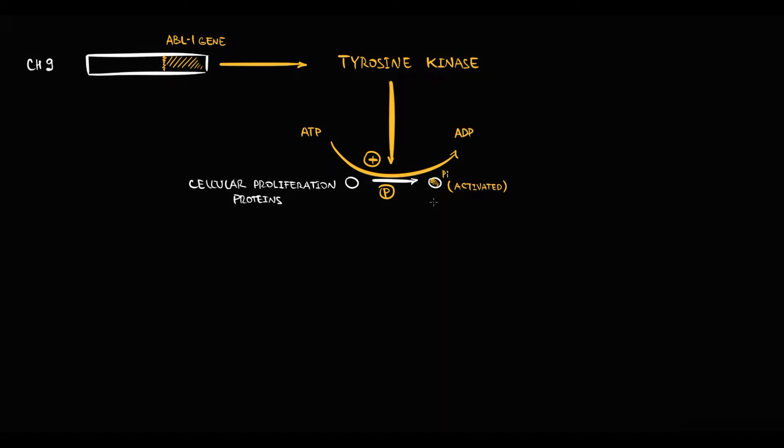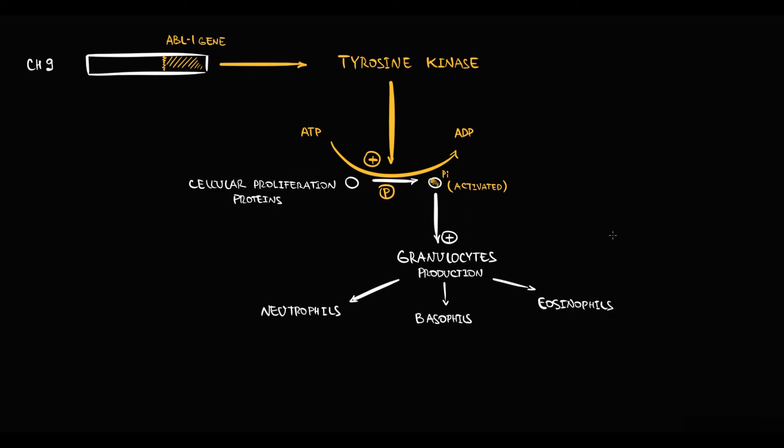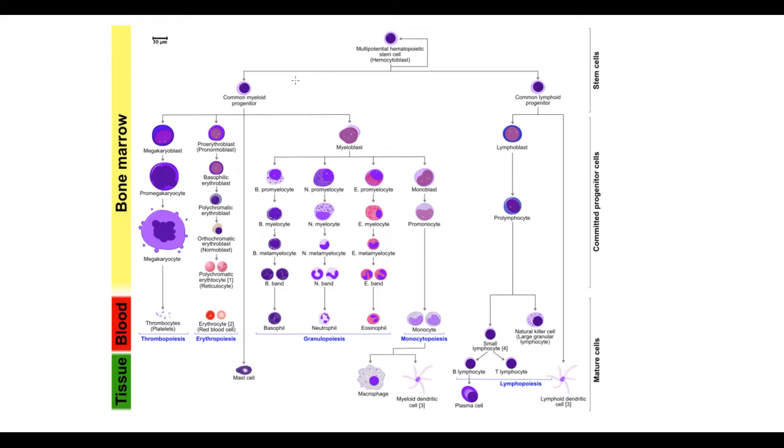Important that tyrosine kinase mostly regulates the proliferation rate of granulocytes, which are neutrophils, basophils and eosinophils. Recall that hematopoiesis can be subdivided into myelopoiesis and lymphopoiesis, and myelopoiesis can be subdivided into erythropoiesis, thrombopoiesis, monocytopoiesis, and finally granulopoiesis. The final products of granulopoiesis are neutrophils, basophils and eosinophils.